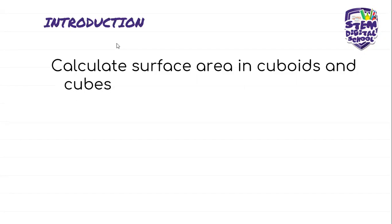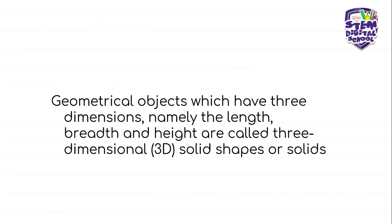What is very important here to remember is that there is a formula to calculate the surface area in cuboids as well as in cubes. We have defined the geometrical objects which have got three dimensions, and we said that the three dimensions are length, breadth, as well as the height. These three-dimensional solid shapes are also known as the 3Ds.